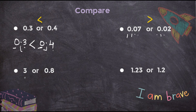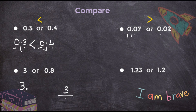Now let's check another example: here it is 3 and here it is 0.8. I cannot see any decimal in the 3, so where is the decimal? Always remember — whenever you see any number without a decimal, the decimal point will always be after that number. Just like in fractions, when we say the number 3, it is in the numerator and the denominator is always 1. Similarly here, when there is no decimal visible beside a number, the decimal point is always after that number — be it a 1-digit, 2-digit, 3-digit, or even 300.